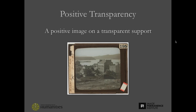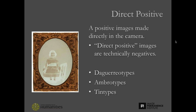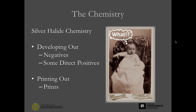A print is usually made from the negative, and it's a positive image on an opaque support. A positive transparency is a positive image on a transparent support — in the 19th century, these are also commonly called lantern slides, and they're meant to be projected. In the 19th century, we also have what we call direct positives, a positive image made directly in camera. However, direct positives are all technically negatives — they're just made to appear positive through a variety of means. Our direct positives in the 19th century include daguerreotypes, ambrotypes, and tintypes. Ambrotypes in Europe are also referred to as collodion positives on glass, and tintypes are also sometimes called ferrotypes.